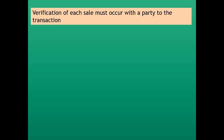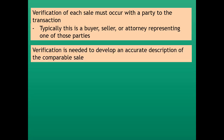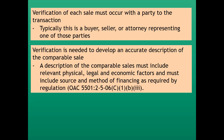Verification of each sale must occur with a party to the transaction — typically a buyer, a seller, or an attorney representing one of those parties. Verification is needed to develop an accurate description of the comparable sale, including relevant physical, legal, and economic factors, and must include source and method of financing as required by Ohio Administrative Code, which governs ODOT, and is also mirrored in 49 CFR Part 24, Section 24.103. The verification process remains the same whether the project has federal or state-only funding.